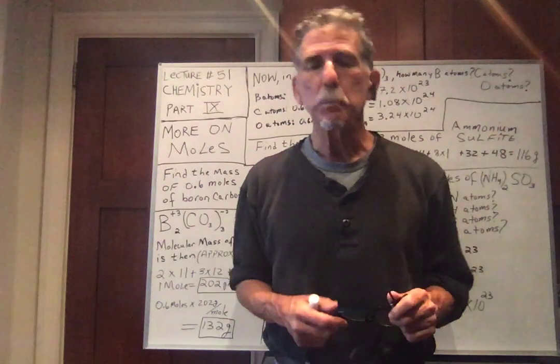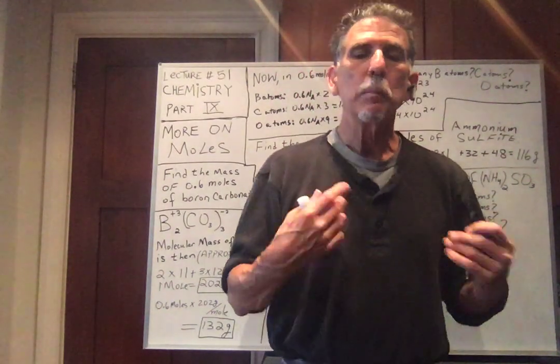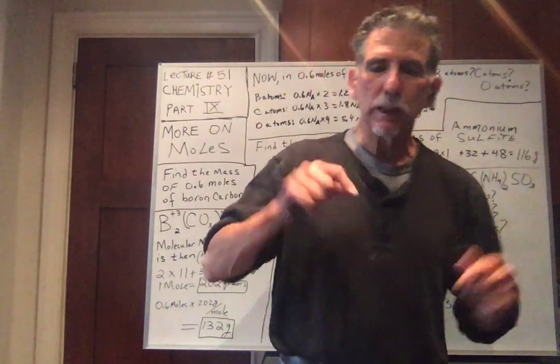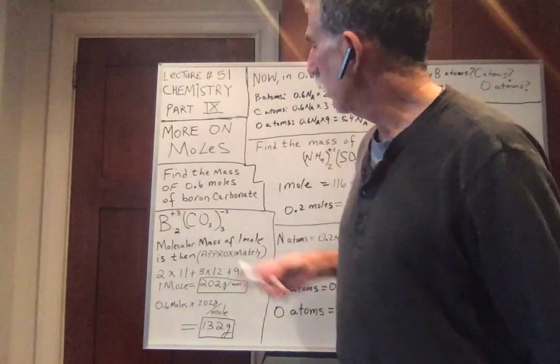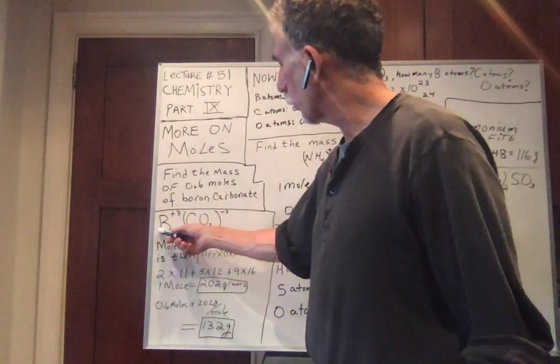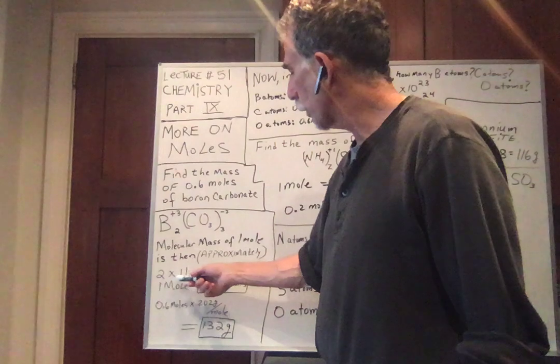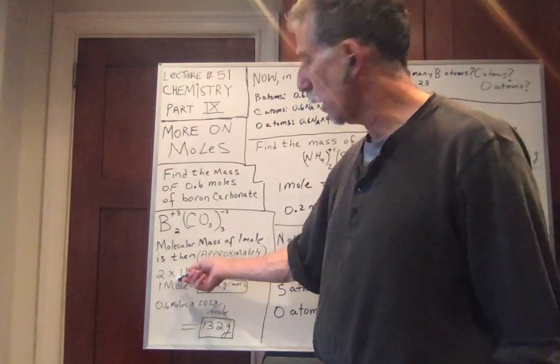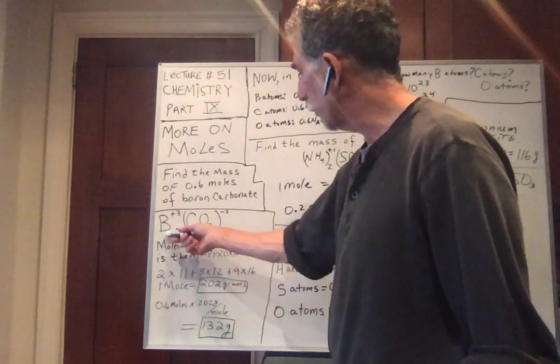Once we do that we can get the molecular mass or molecular weight by just using a periodic table and adding up numbers. So what do we have? We need 2 borons. So a boron has a mass of approximately 11. We're rounding off. 2 times 11.